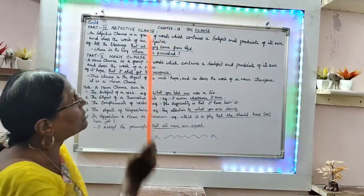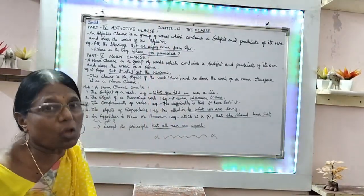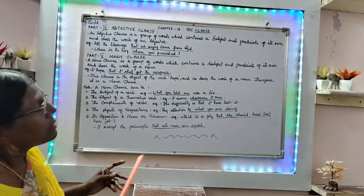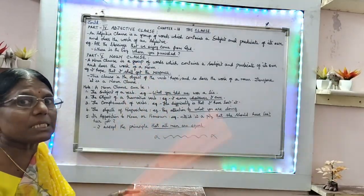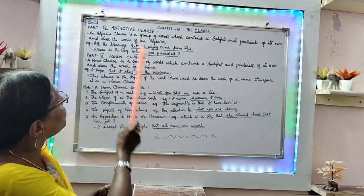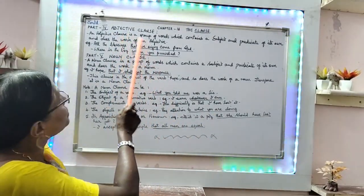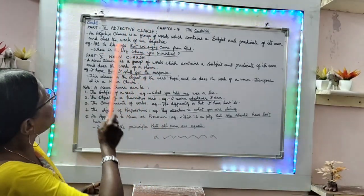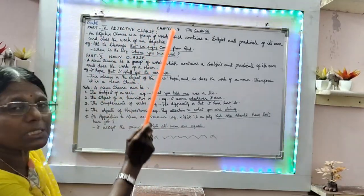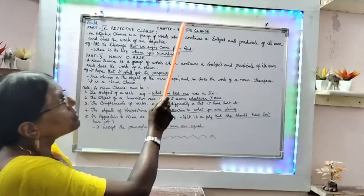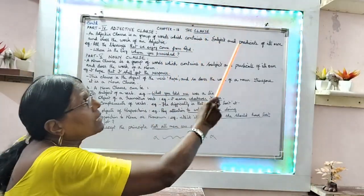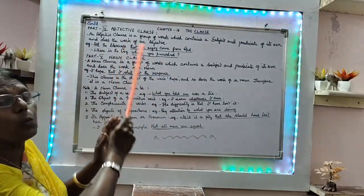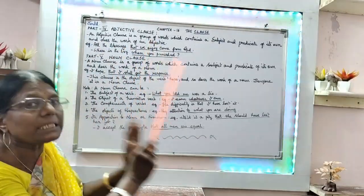Welcome back to conclude the clause, chapter 16. I have completed adverb clause. Now we shall go to adjective clause. An adjective clause is a group of words which contains a subject and predicate of its own and does the work of an adjective.